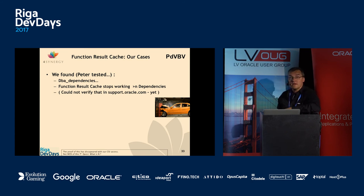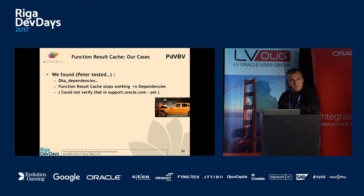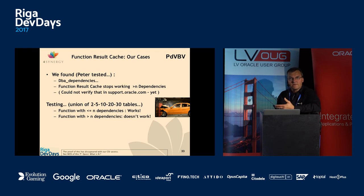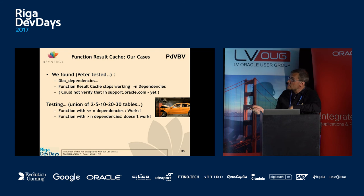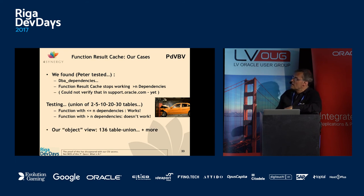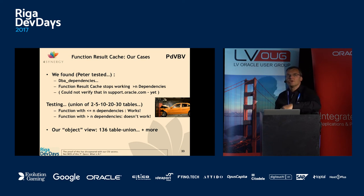It makes perfect sense: the database engine cannot keep track of too many dependencies — it has to invalidate the cache at the right point in time — and nobody could tell us what N was. That's your quiz: go home, test it, mail me what you think N is. You can do it by trial and error, open a service request with Oracle, or look it up online. We tested it with unions of 2, 5, 10, 20, 30 tables to find which N breaks the system.